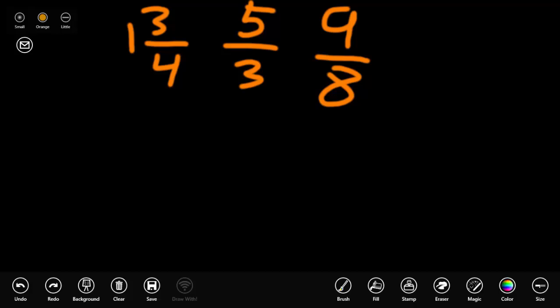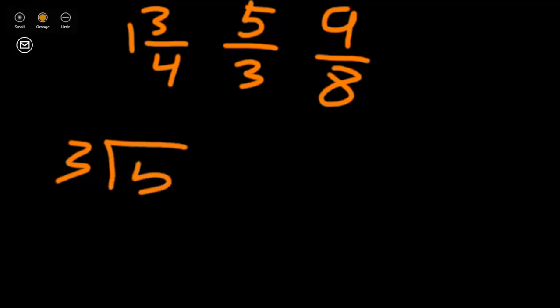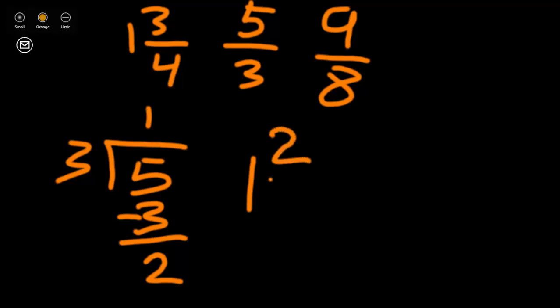Let's look at 5/3rds. We need to find out how many times 3 goes into 5. Our denominator is also going to be our divisor. 3 goes into 5 one time equally — 3 times 1 equals 3, and we have 2 left over. That means our mixed number will be 1 with 2/3rds left over. So 5/3rds is equal to 1 and 2/3rds.